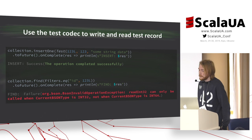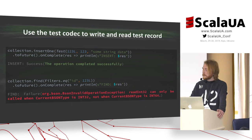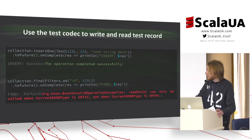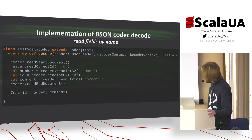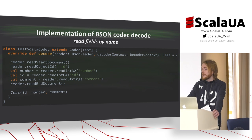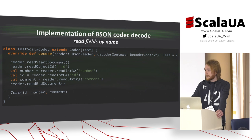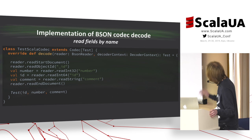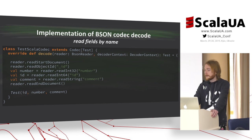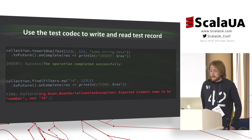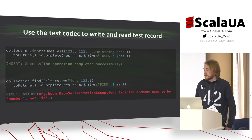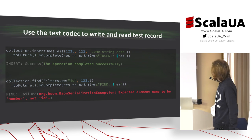However, in this case, the driver will throw an error during an attempt to read this data back. Code on this slide presents additional changes in the BSON codec to read test model fields by name. We added number, ID, and command field names. But in this case, another error will be thrown when reading data with incorrect order.